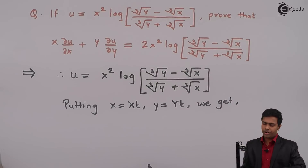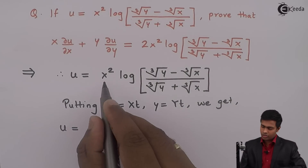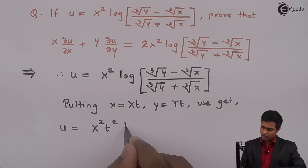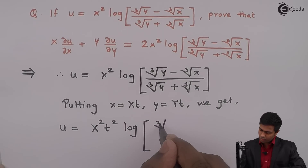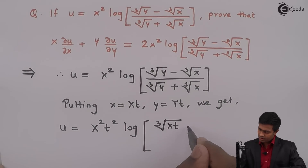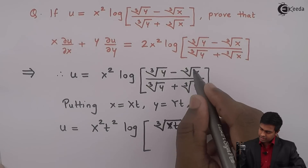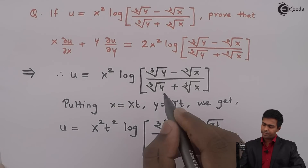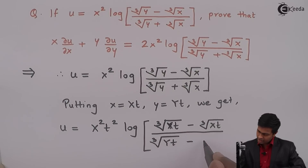After substituting, x squared becomes x squared t squared. Inside the log, in the numerator we get cube root of yt minus cube root of xt, and in the denominator we get cube root of yt plus cube root of xt.